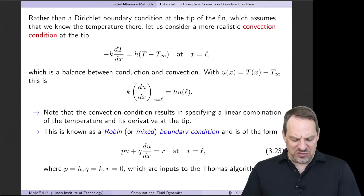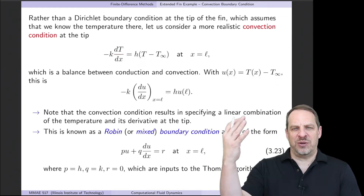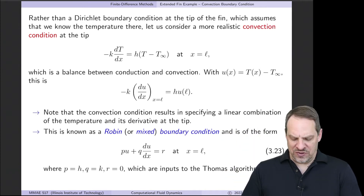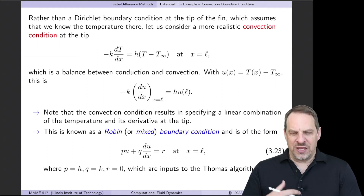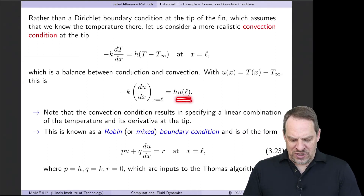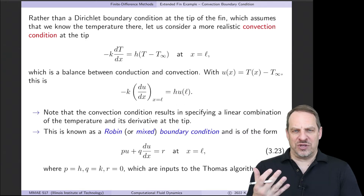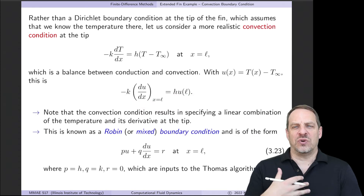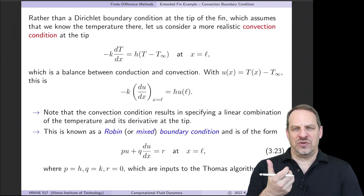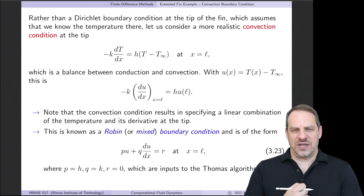With this boundary condition, we change our variable from T to U, where U equals capital T minus T-infinity, the ambient temperature of the fluid flowing past and cooling the extended fin. That gives us our new dependent variable U as a function of x. When we do that, the condition becomes U at the tip plus dU/dx at the tip, which is just du/dx again at the tip.